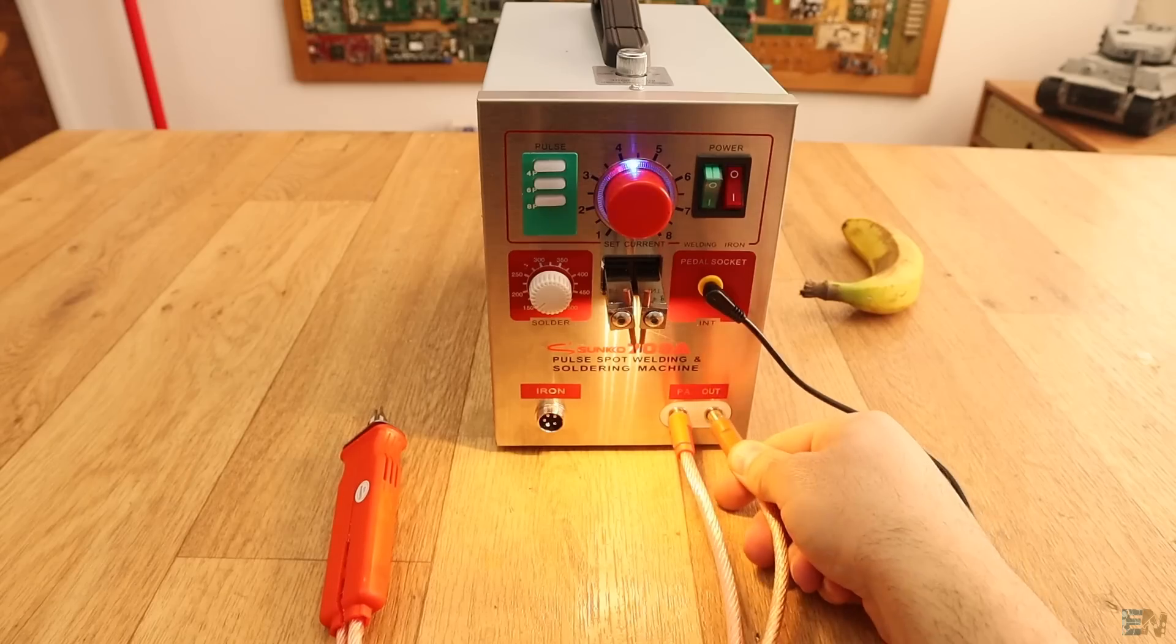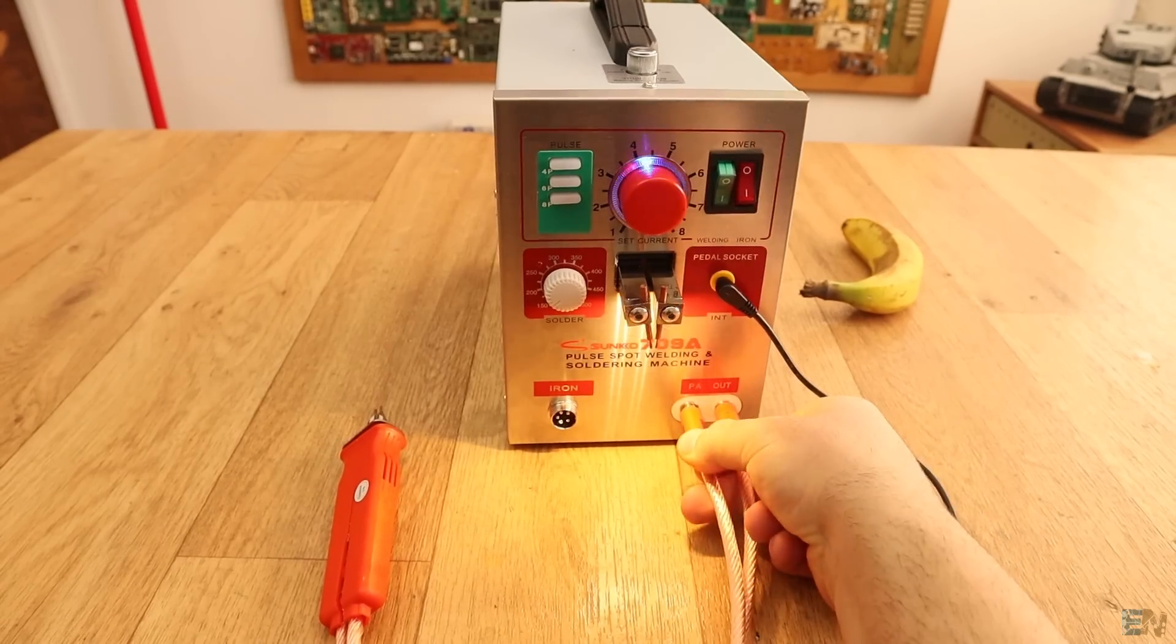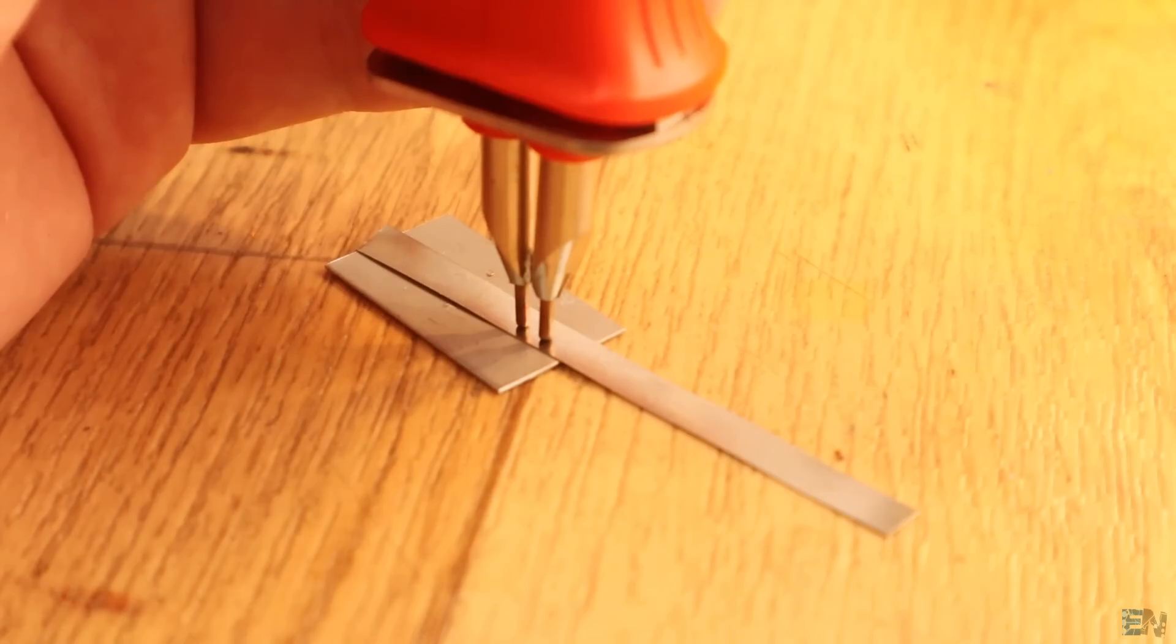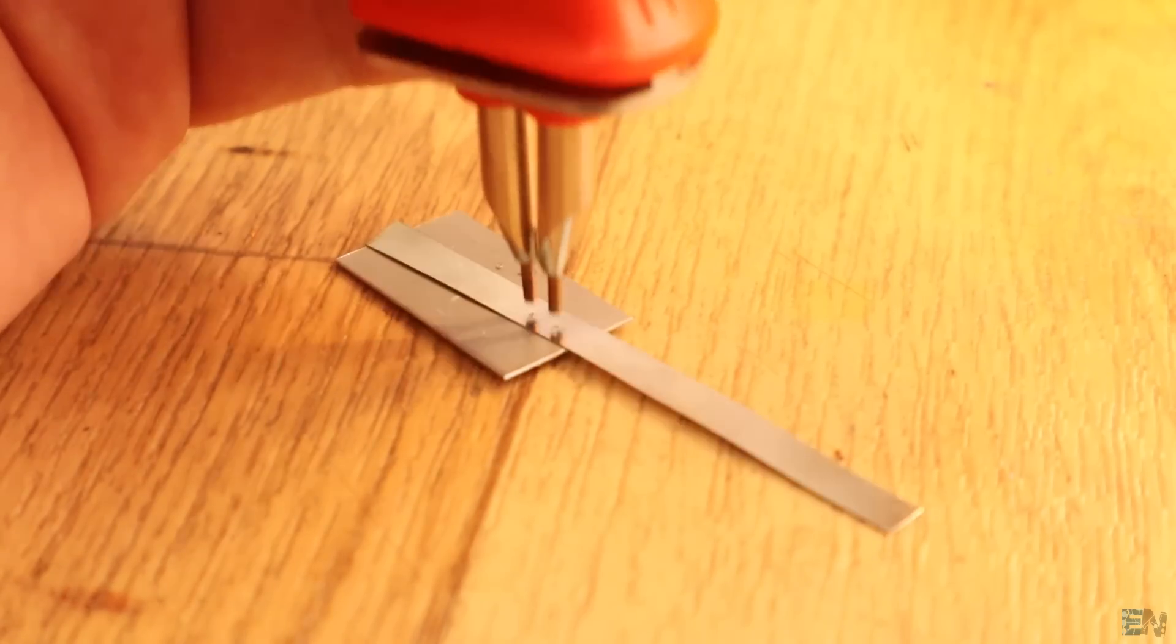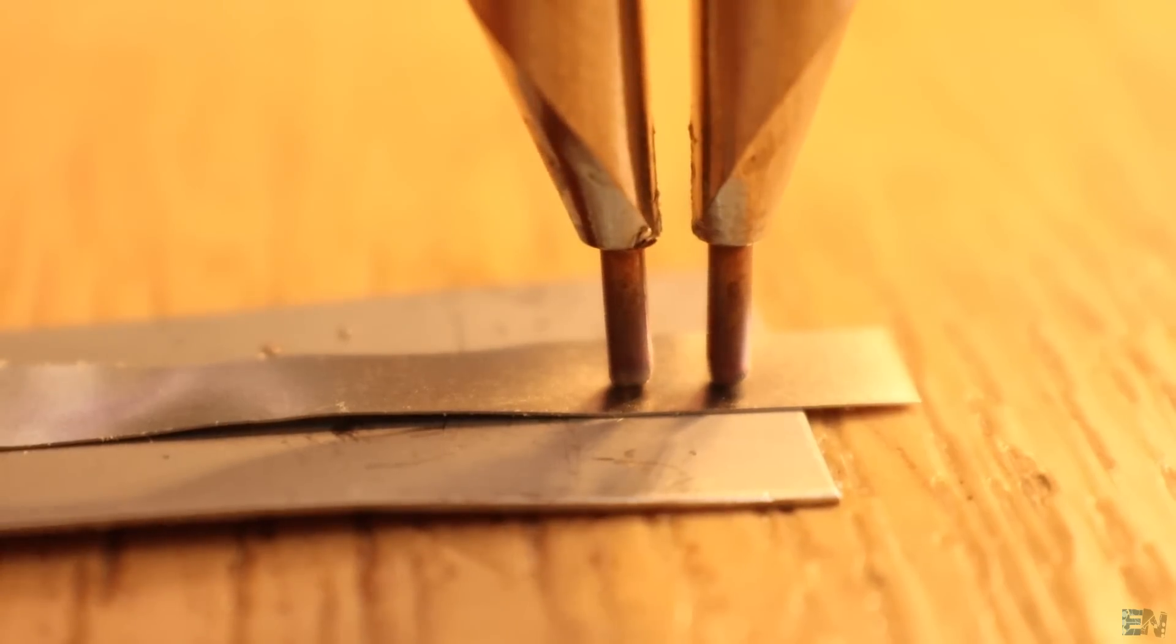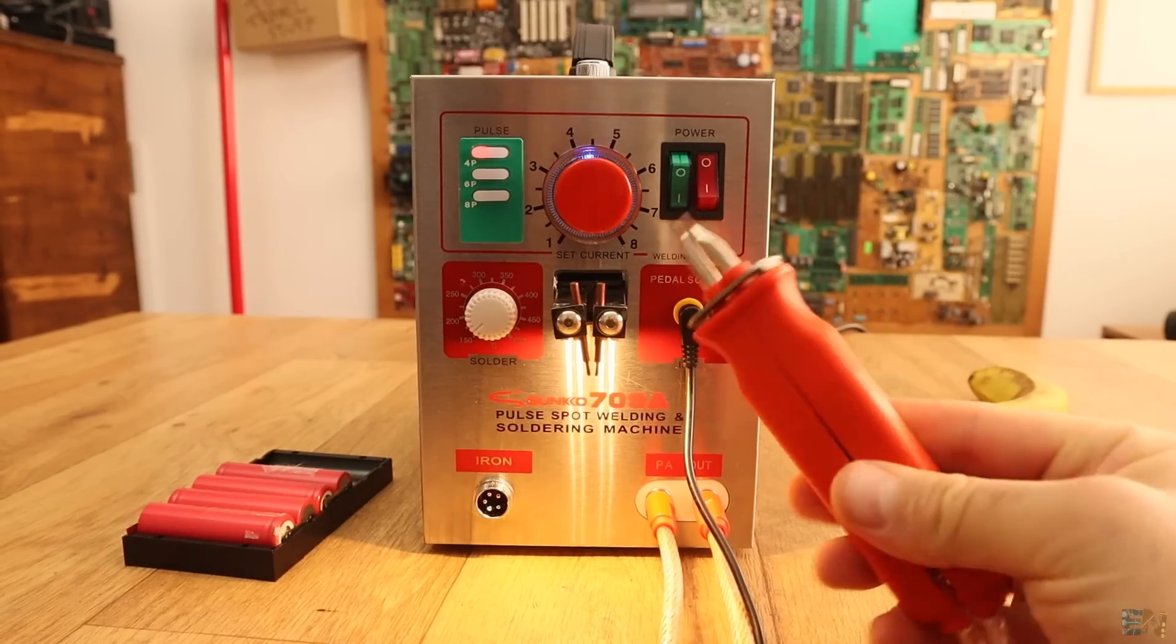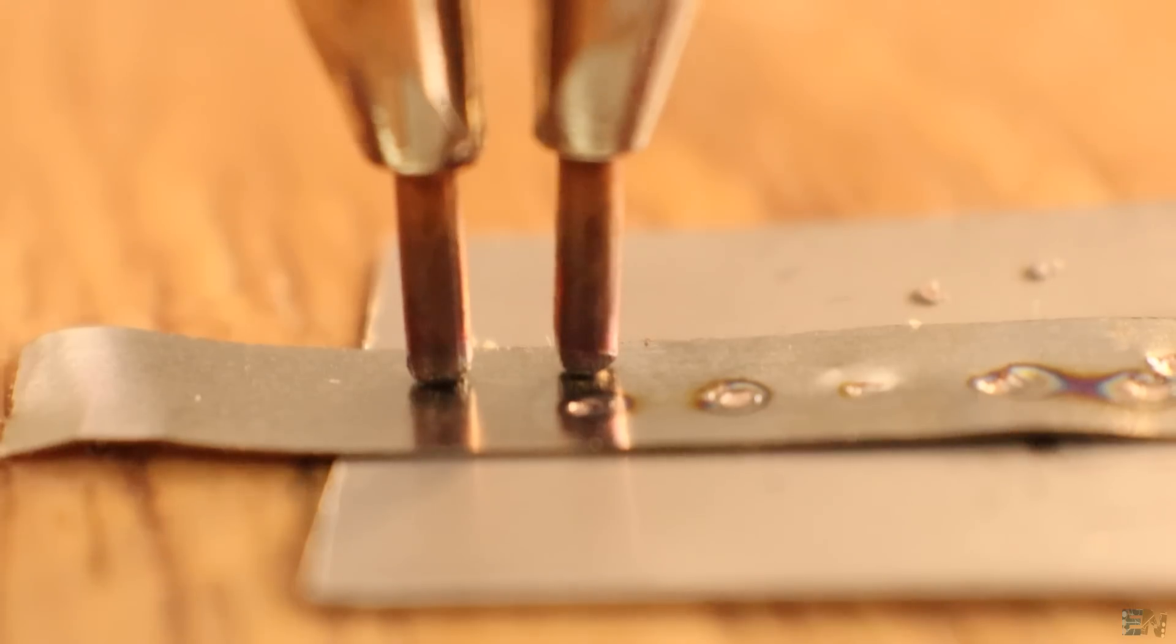Now I connect the extension electrodes and make a few tests as well. I've noticed that for some reason, at the same power selected, the power applied with these electrodes is lower and I don't know why. Maybe there are some losses on these cables. The direct contact is much more powerful.